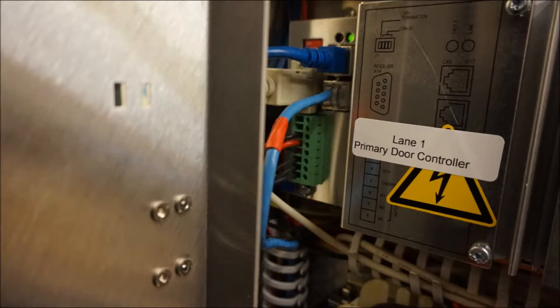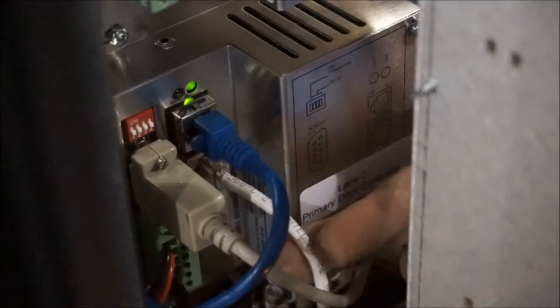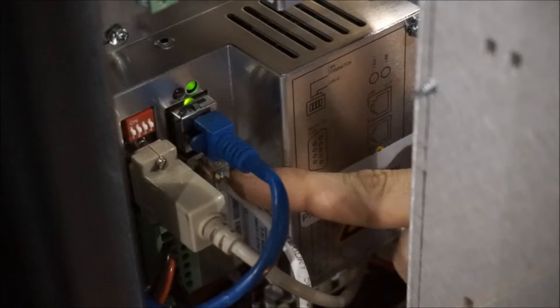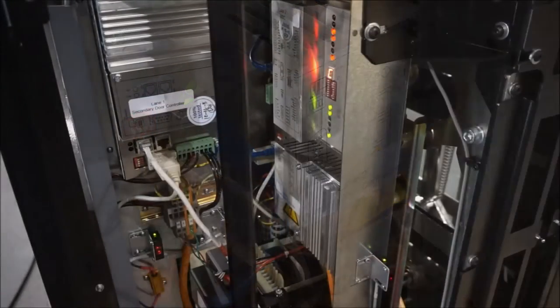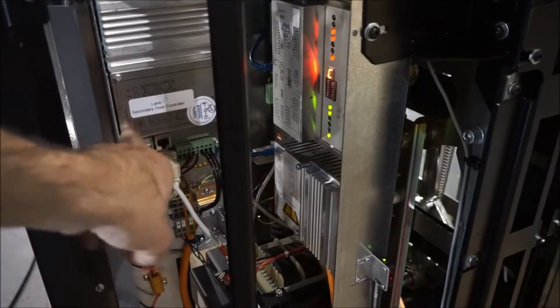Now install the provided CAT5 network cable or equivalent between the primary side MMC120 door controller and the secondary side MMC120 door controller for communications.